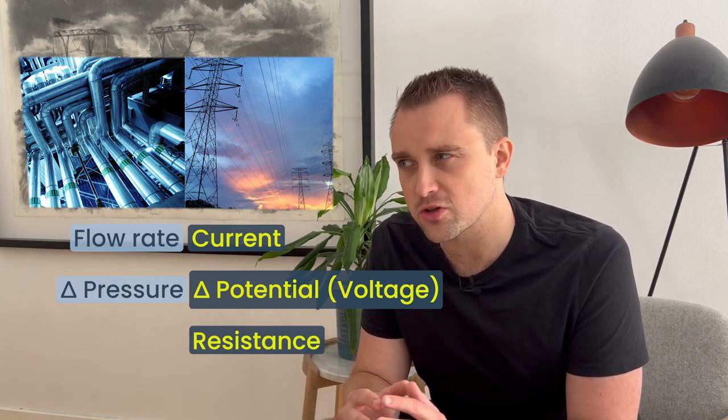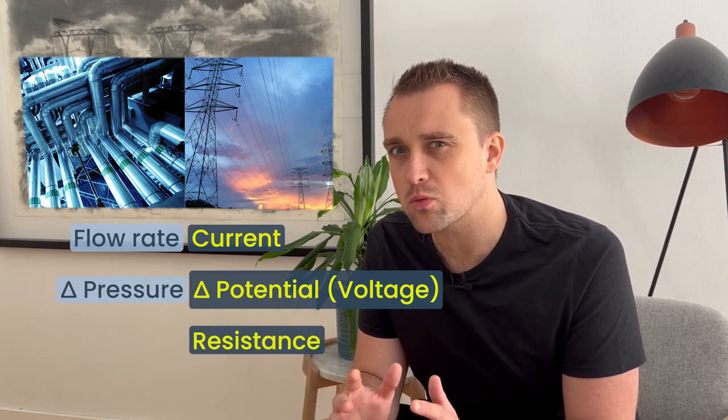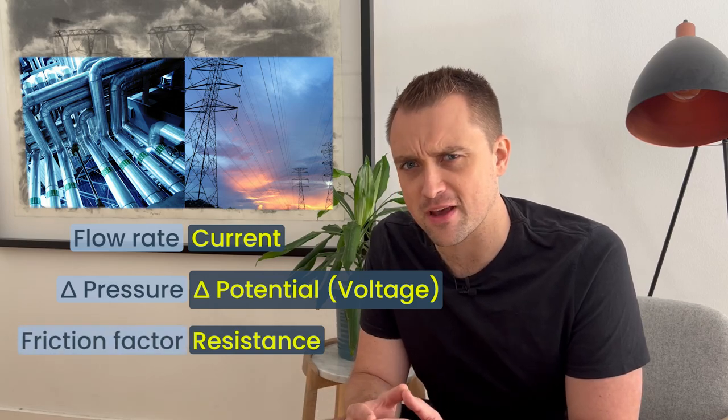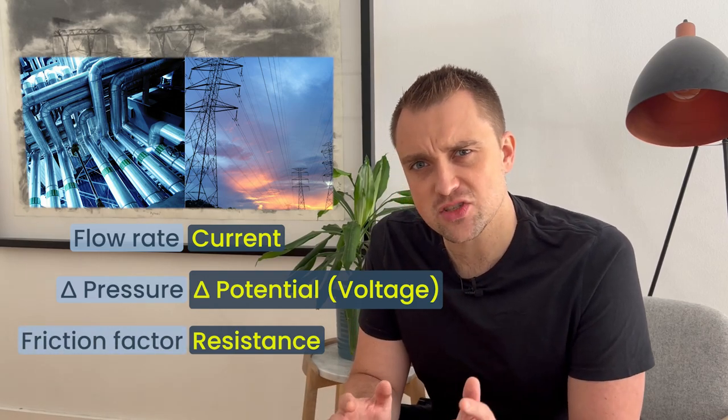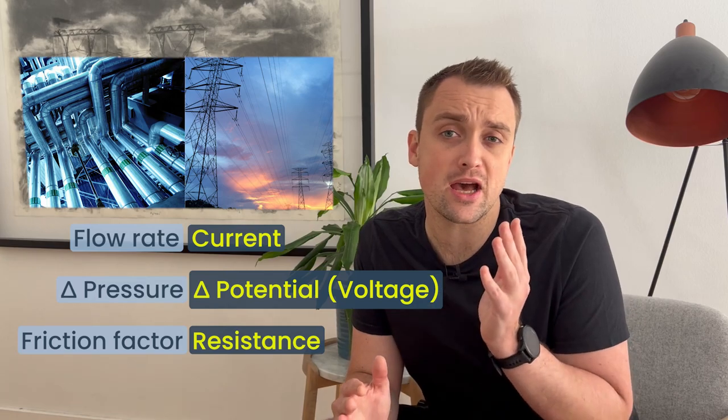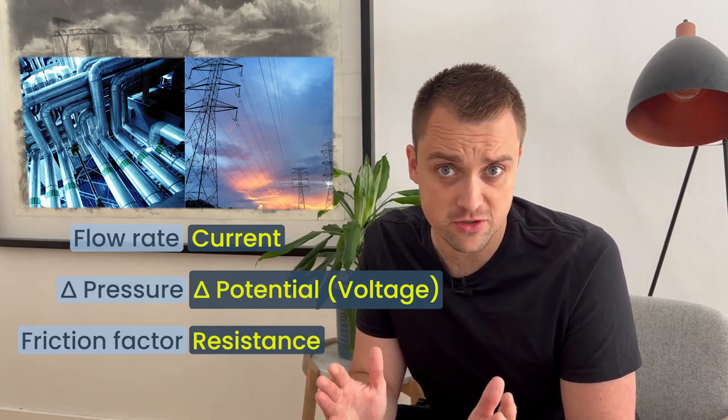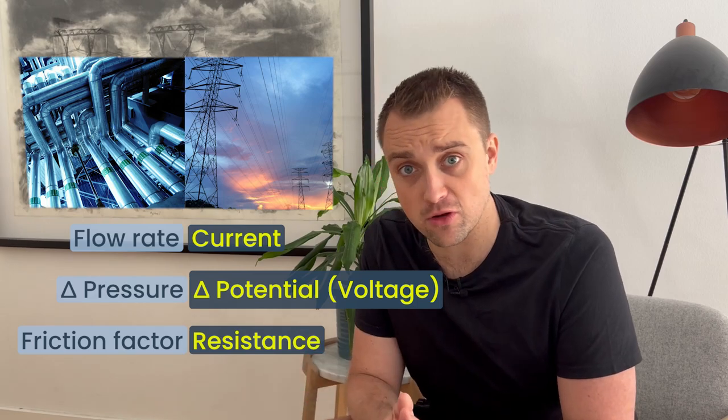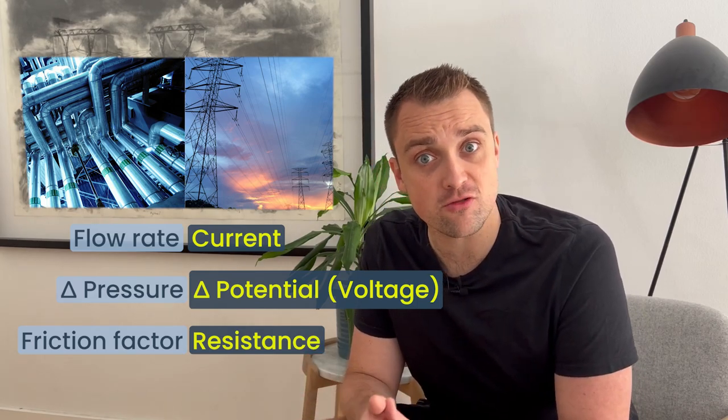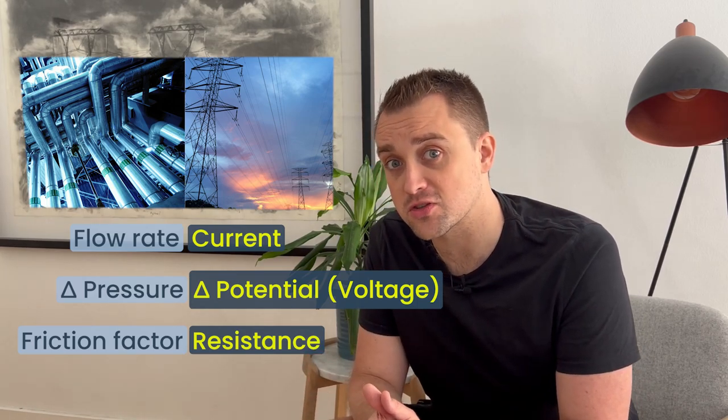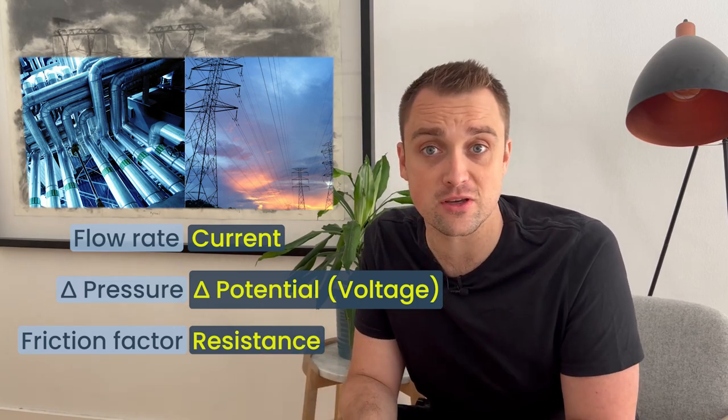What we have in fluid flow circuits is a little bit wonkier. We have friction factors. Just like resistance is the relationship between a voltage drop, a potential difference across a resistor, and the current flow through it, a friction factor relates the flow rate through a circuit with the pressure drop associated with that circuit. Now when you put resistors in series in an electrical circuit, the overall resistance of that circuit is simply equal to the sum of the individual resistances.